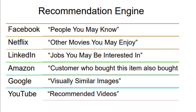Apart from that, recommendation systems are something you all might have experienced. On Facebook we see 'people you may know.' On Netflix, we can discover which other movies we can enjoy. LinkedIn suggests which jobs we might be interested in. Amazon shows that customers who bought one item also bought another, recommending products alongside what we're purchasing. Google shows visually similar images, and YouTube recommends videos based on our previous search and watch history. This is a major example of how big companies use recommendation engines to serve us better.